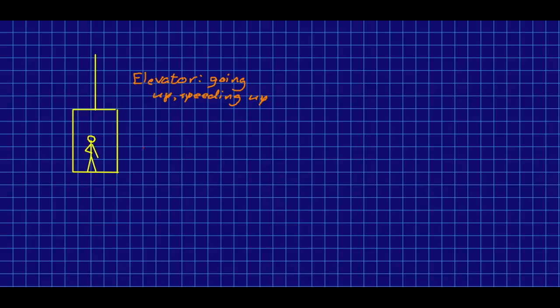Let's do another example. So here's a woman riding in an elevator, and the elevator is going up, and it's speeding up as it does so. And let's draw a free body diagram for the woman. So again, I'll start establishing notation. I'll use W to represent the woman. And what's she in contact with? Well, the only thing she's in contact with is the floor of the elevator.